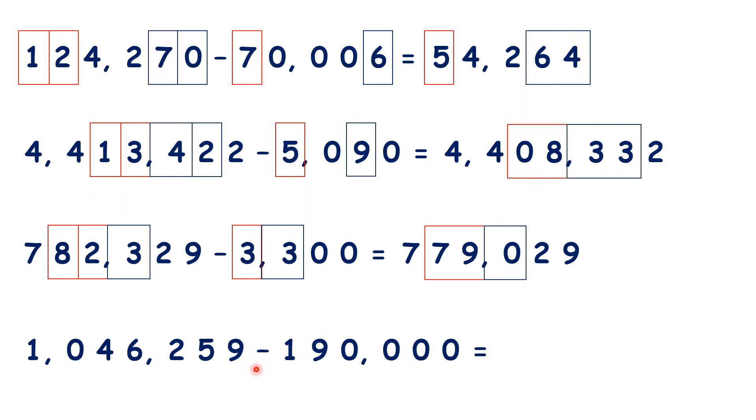Now for this last question, we can get the answer by subtracting 19 from 104, and then leaving our thousands, hundreds, tens, and units digits the same.